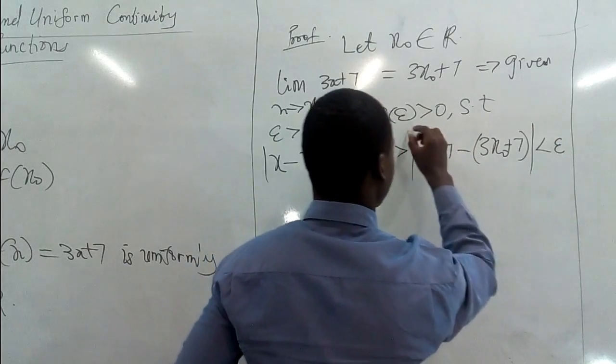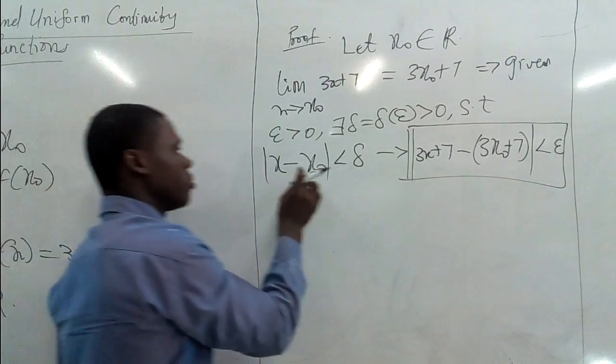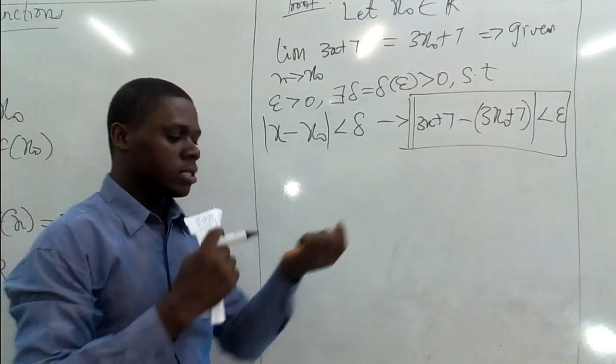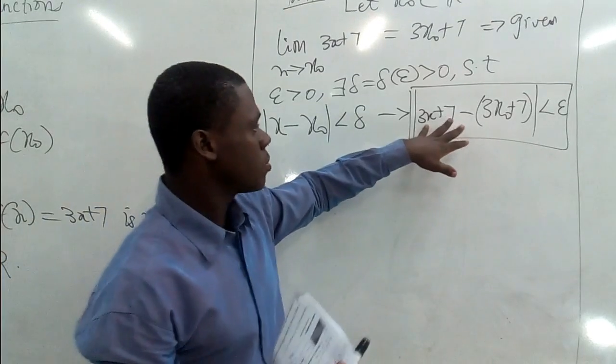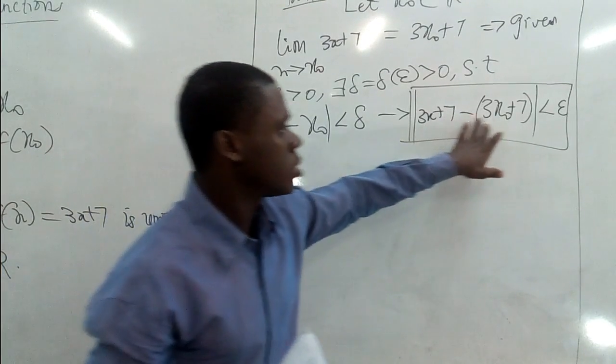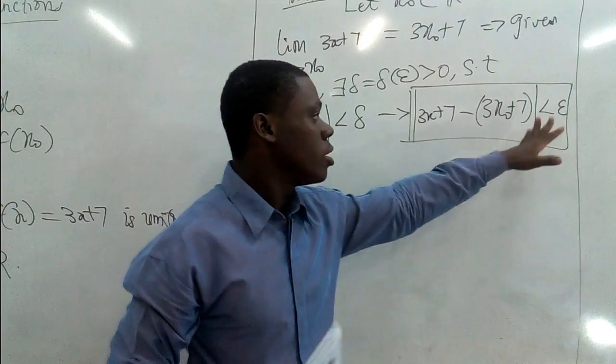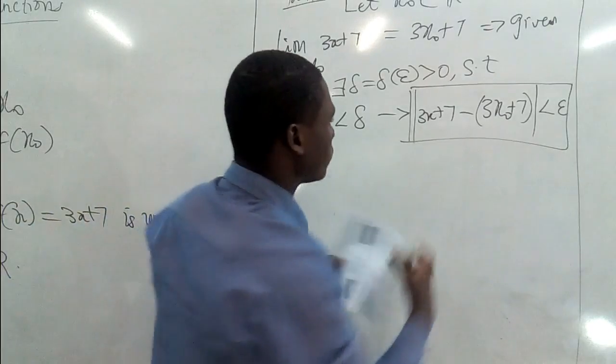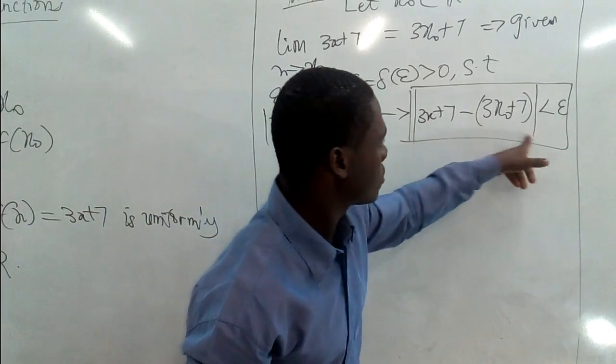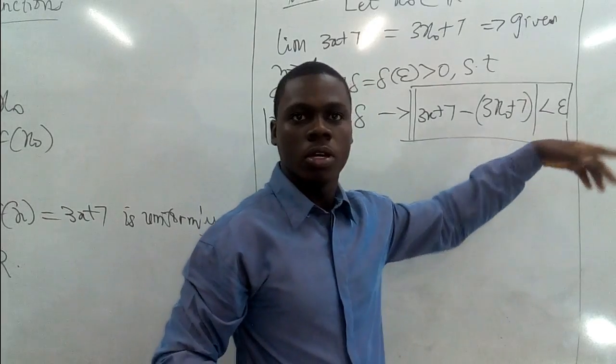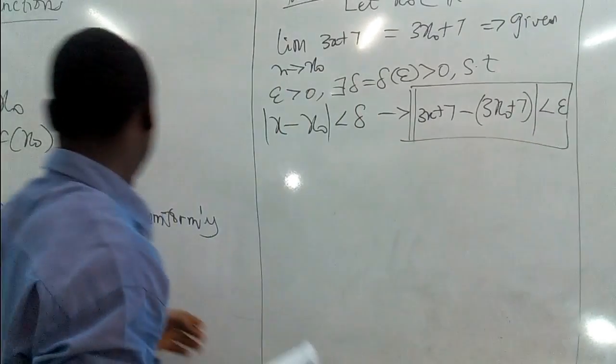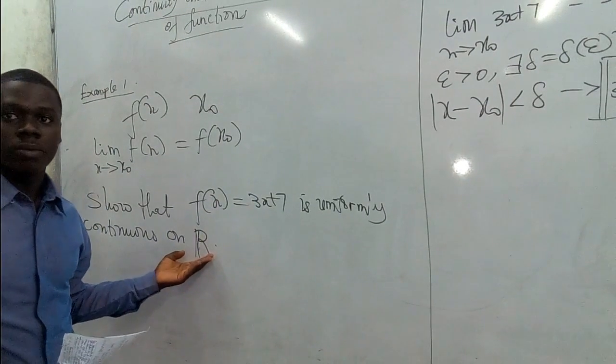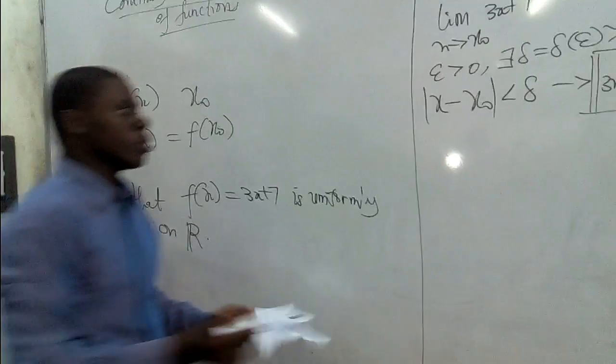So this is what we mean. Any time we say |x - x₀|, any time it is less than delta, the implication is that the absolute value of the function minus its limit should be less than epsilon, where epsilon is a very small positive number. So let's pick it from here. Our ability to show that the absolute value of all this is less than epsilon means success for us as far as proving to see that this function is uniformly continuous on the set of real numbers.